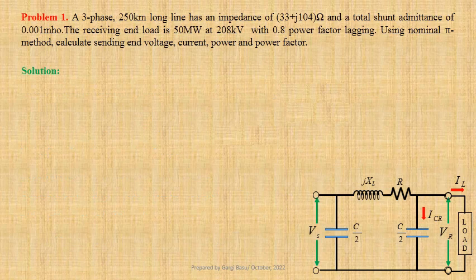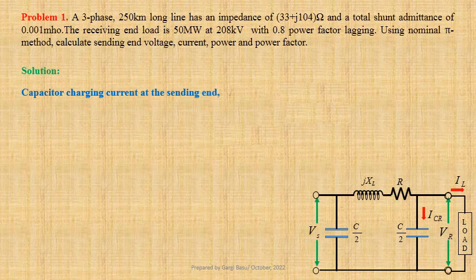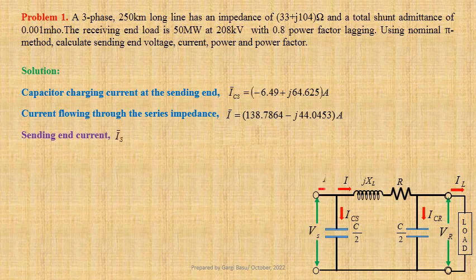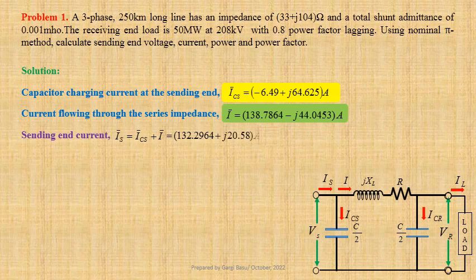We have computed capacitor charging current at the sending end: ICS equals −6.49 + j64.625 amperes. Current flowing through the series impedance I equals 138.7864 − j44.0453 amperes. Sending-end current IS equals ICS + I. Using values we get 132.2964 + j20.58 amperes, which may be written in polar form as 133.8875 A ∠ 8.842°.